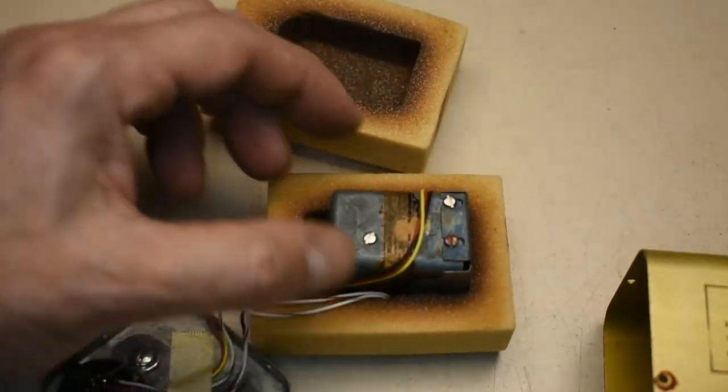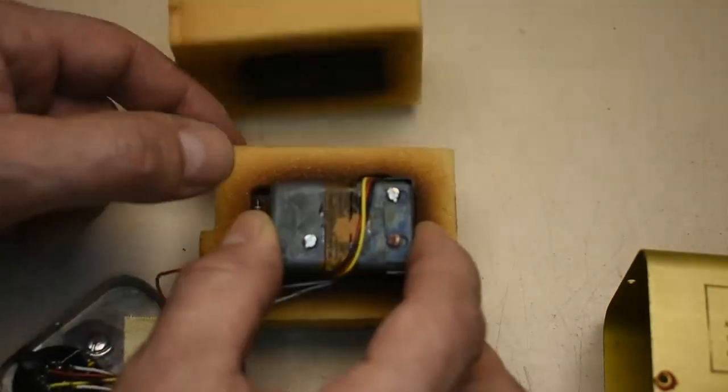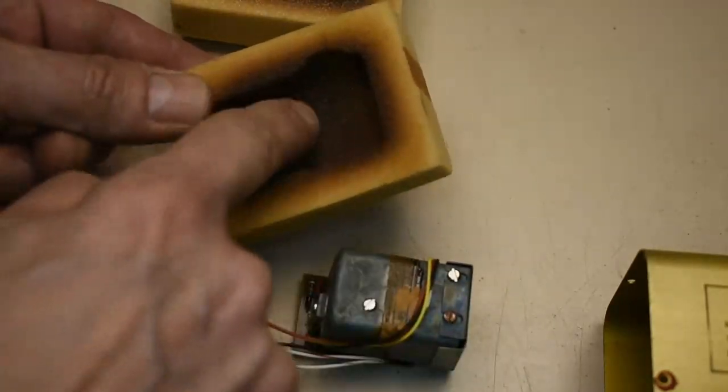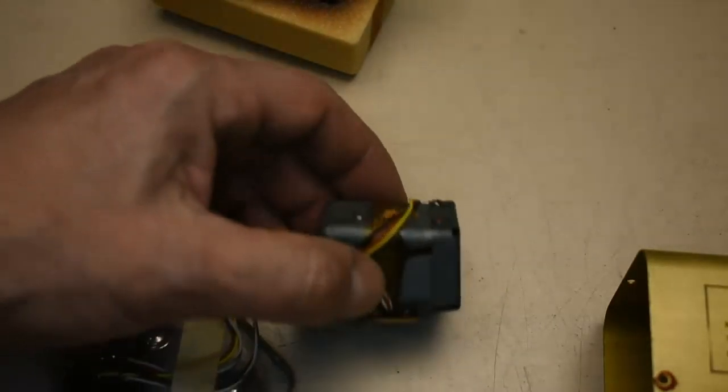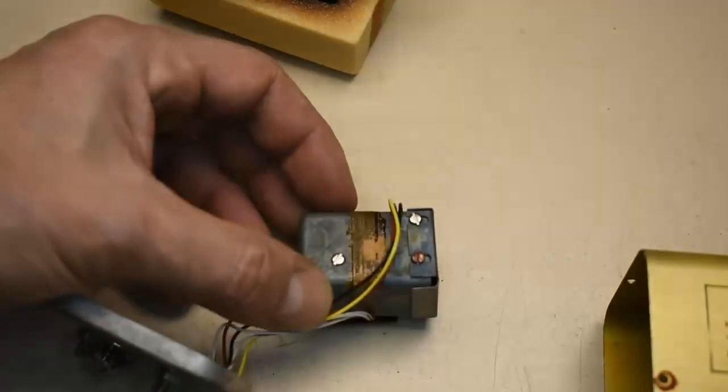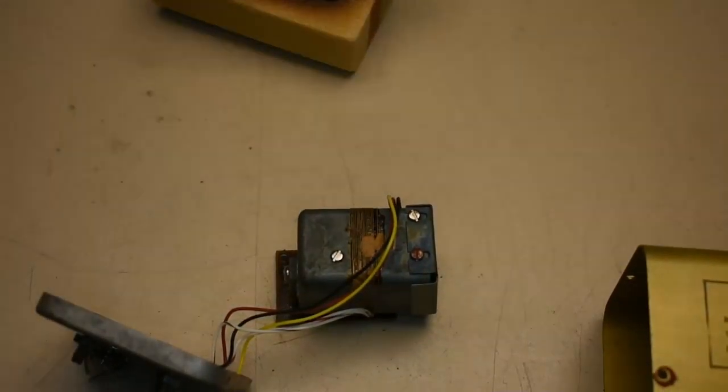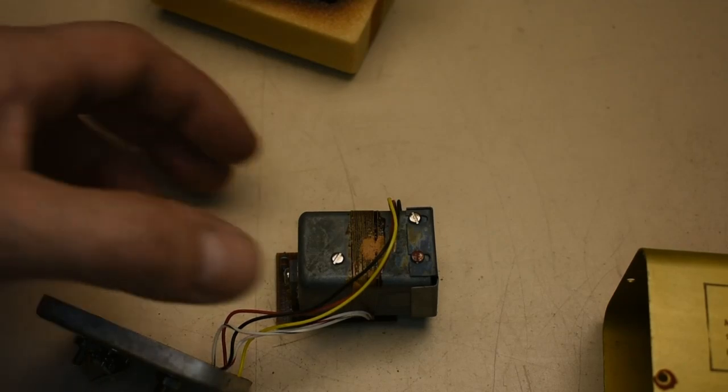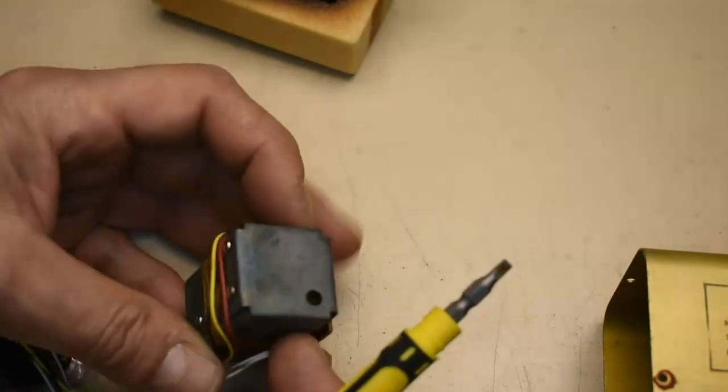And inside that, another little box. And you can see the temperature has been fairly high because it's slightly changed color in the center there. So we'll try and dismantle it a little further and see what's actually inside.